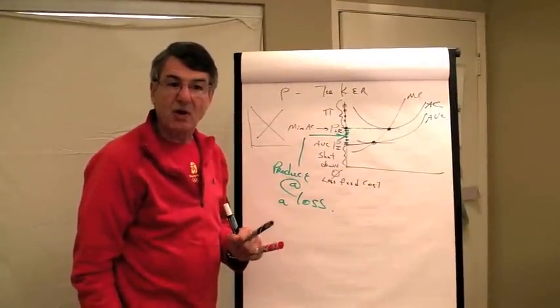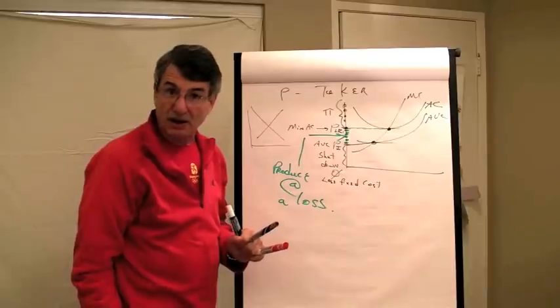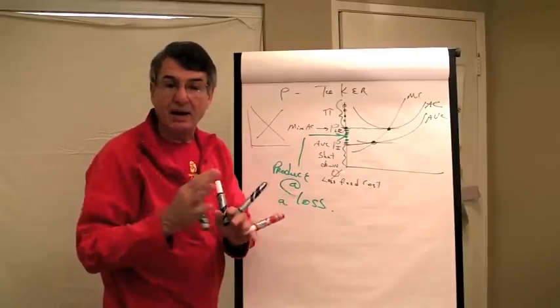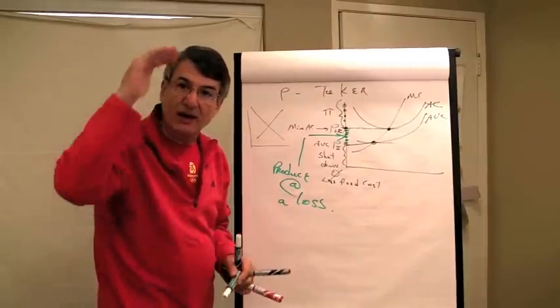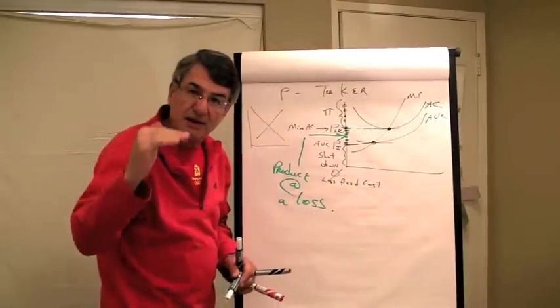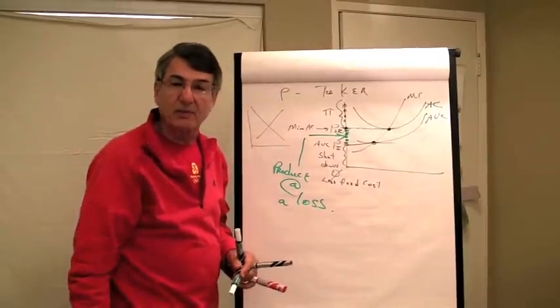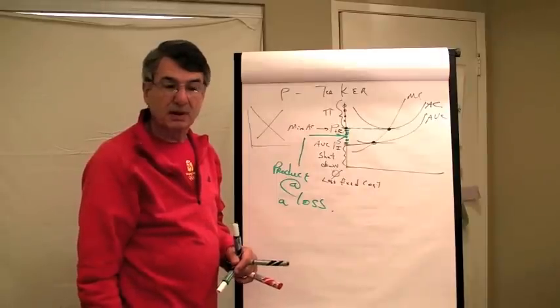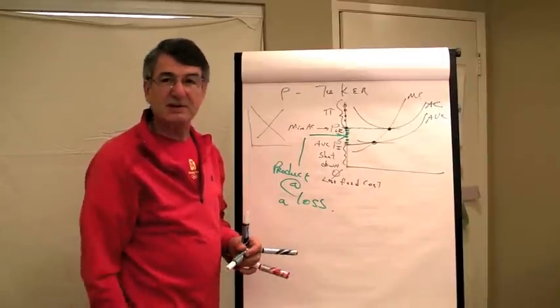Given a set of costs and every possible price, we can determine what the firm will do. That is decision making for a price taker firm in the short run.